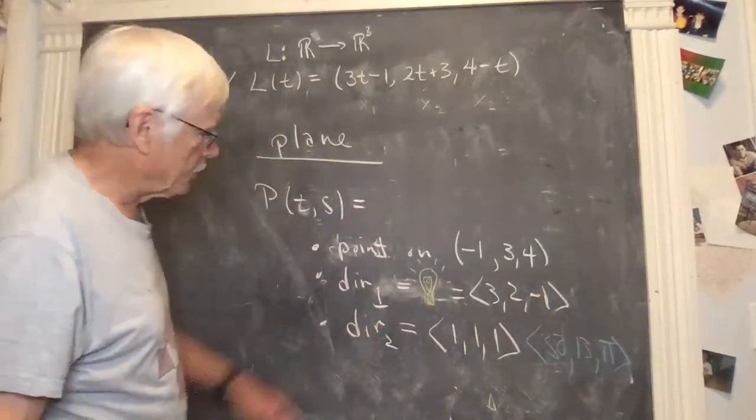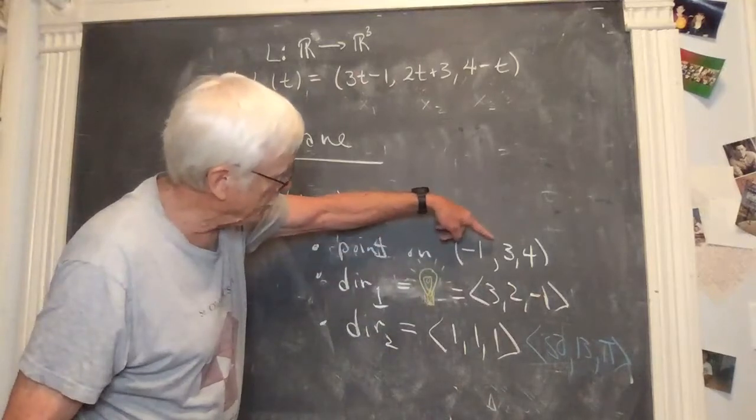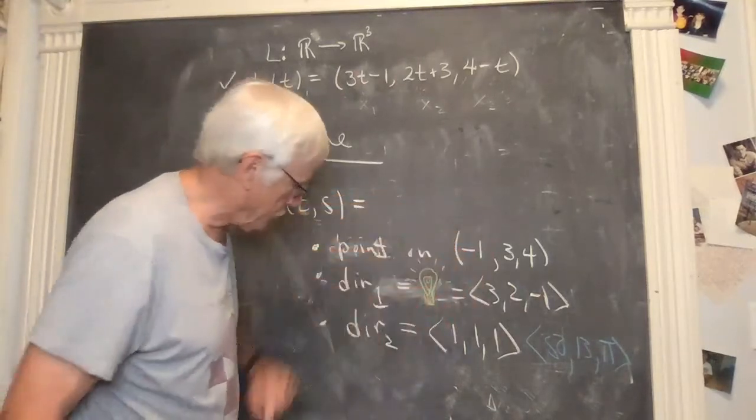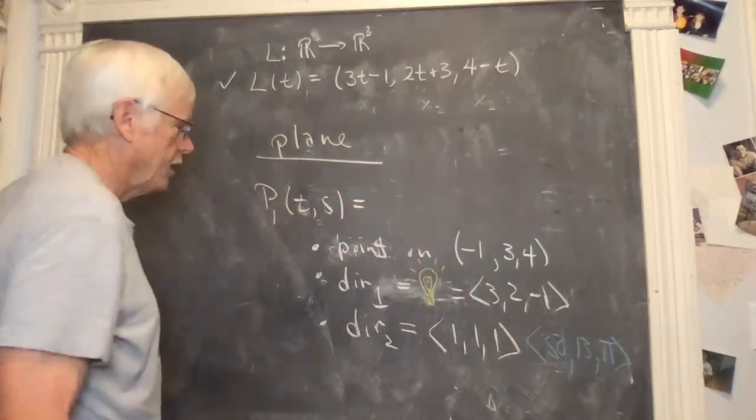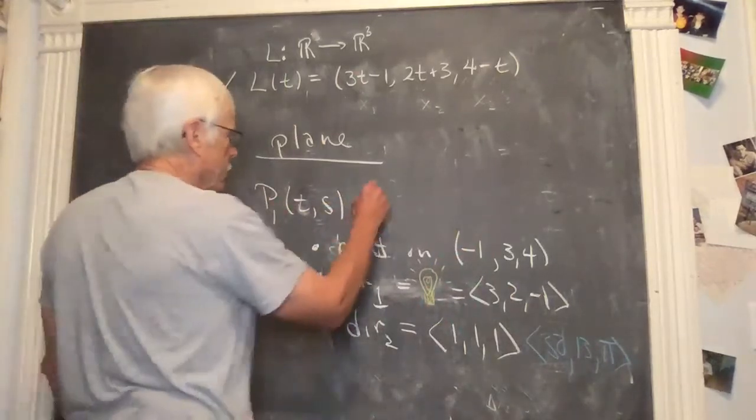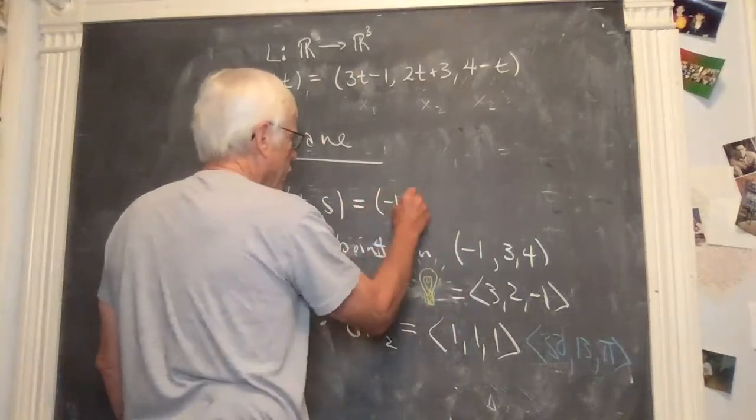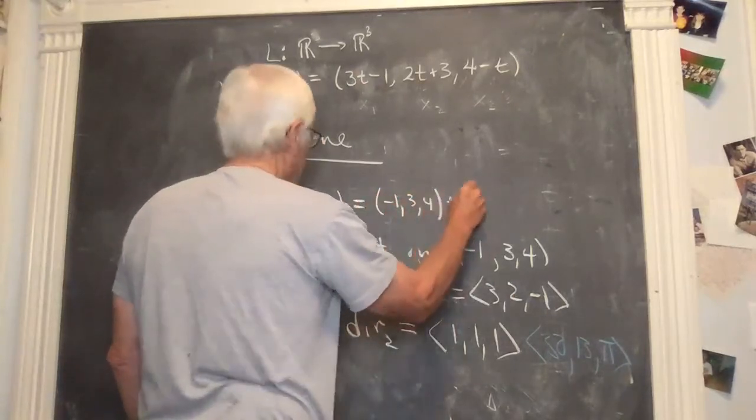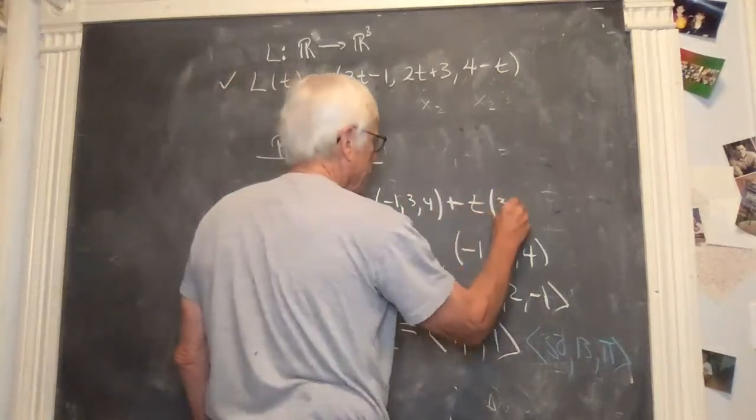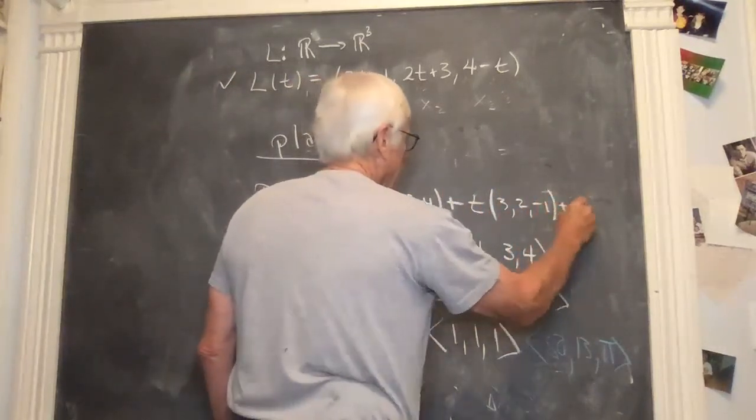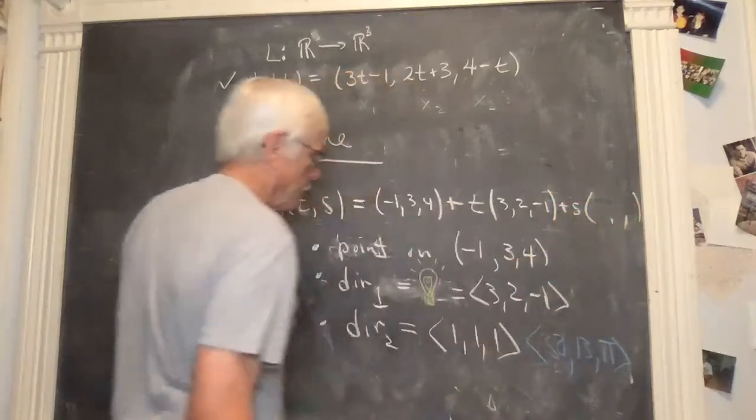So, but let's get our first plane by taking this point, this direction, and this direction. So P1 of T and S is a point on minus one, three, four, plus T times dir one, three, two, minus one. Plus S times dir two, one, one, one.